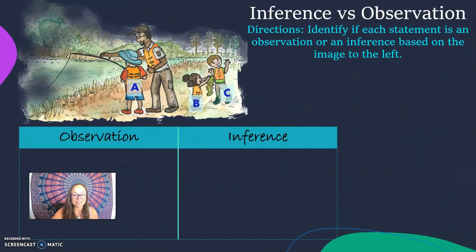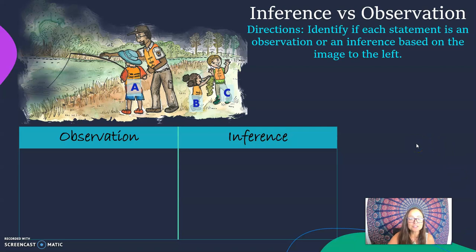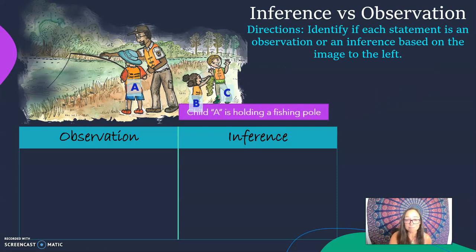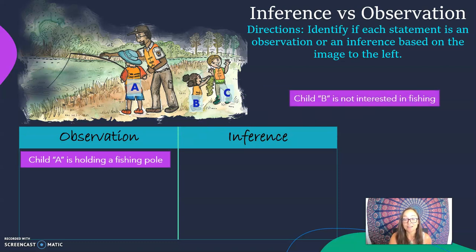So let's go ahead and practice with this: inference versus observation. I have eight statements and I want you to think to yourself, is it an observation or is it an inference? So our first one, we're going to be using the picture here at the top left of the screen. It says child A is holding a fishing pole. Yeah, that's something you can directly see, that is an observation.